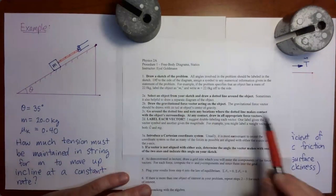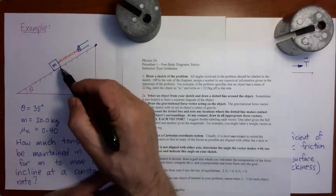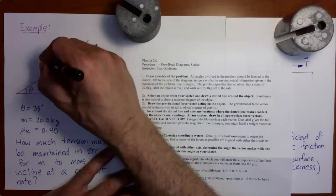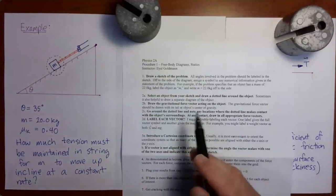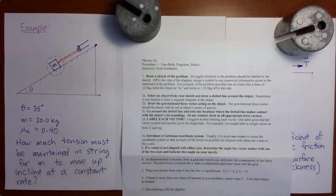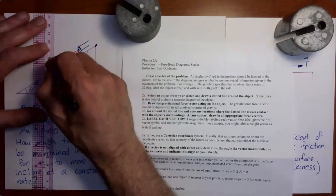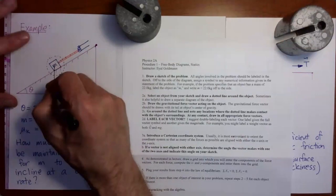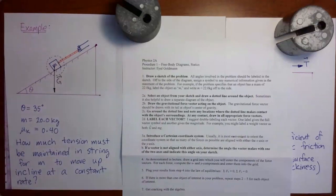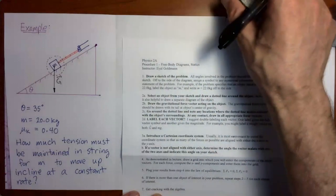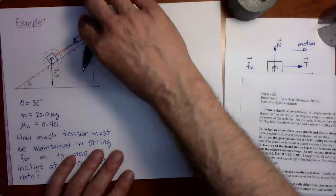Moving on to step 2, we select an object from our sketch and draw a dashed line around it. I'm going to pick that mass, which is sliding up the incline, and draw a dashed line around it. Step 2b: draw the gravitational force acting on the object. I'm going to go into the figure and draw in the gravitational force vector. I'm also going to start a picture off to the side, because I don't want the original figure to get too cluttered.